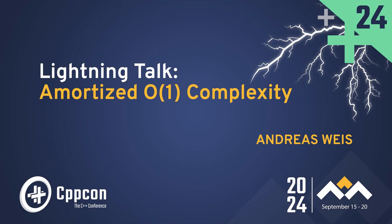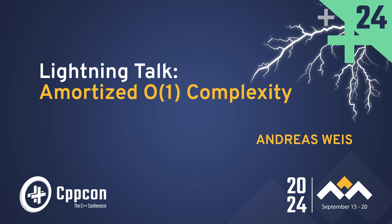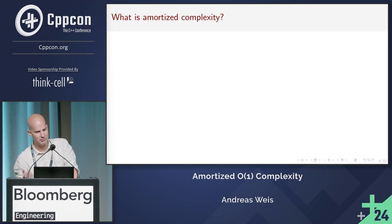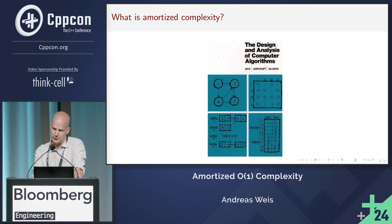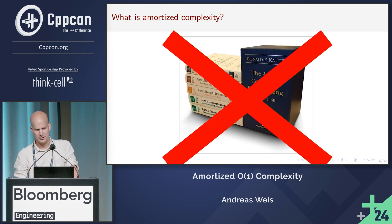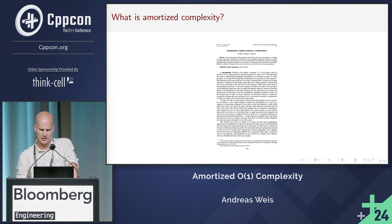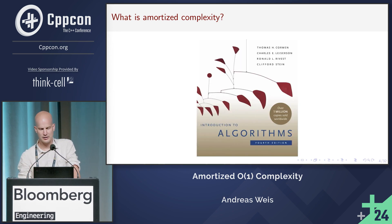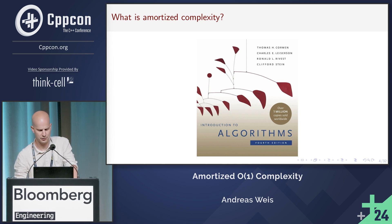This is amortized constant complexity. We all know about runtime complexity, but what is amortized complexity? We check the literature — there's nothing about it in Aho, nothing in Knuth. We find this really old paper by Robert Tarjan, but it's kind of hard to read. Fortunately, Cormen has a full chapter on it, so we're going to go with that.